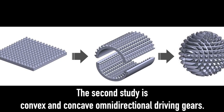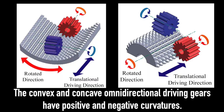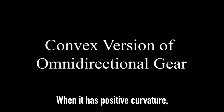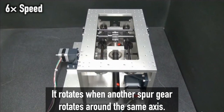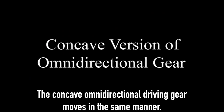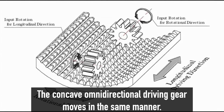These force vectors are combined on the surface of the planar omnidirectional driving gear. The second study is convex and concave omnidirectional driving gears. These have positive and negative curvatures. When it has positive curvature, the convex omnidirectional driving gear translates according to the rotation of one spur gear, and rotates when another spur gear rotates around the same axis. These force vectors are combined on the surface of the convex omnidirectional driving gear. The concave omnidirectional driving gear moves in the same manner.